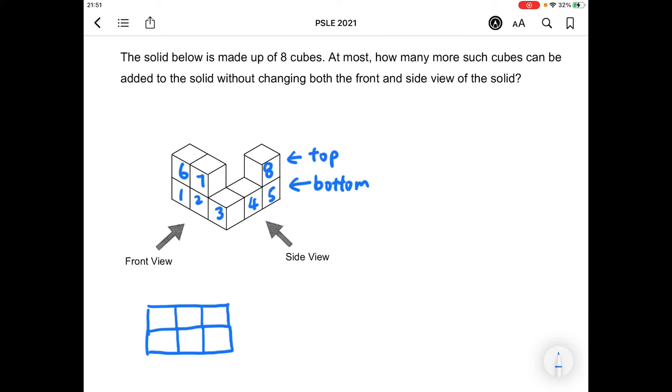As for the side view there should also be three squares at the bottom layer but there are only two squares at the top layer.